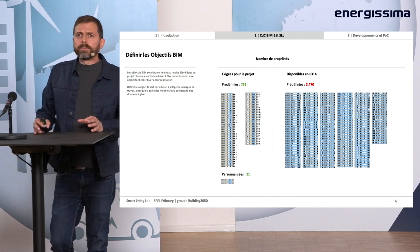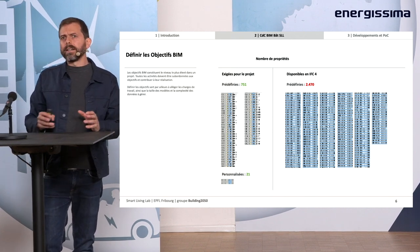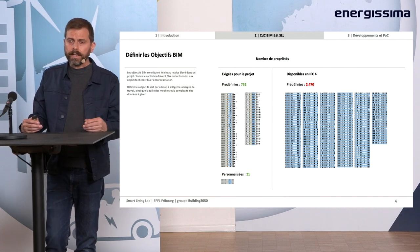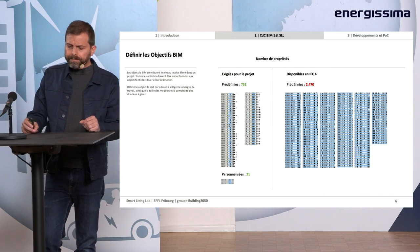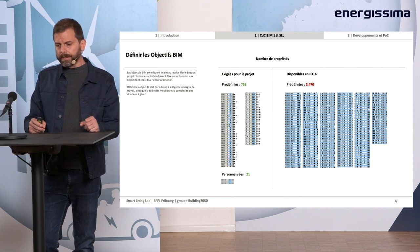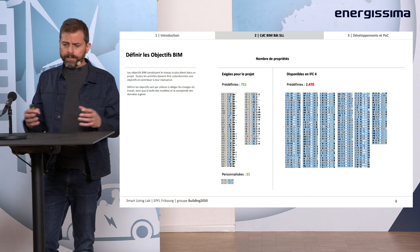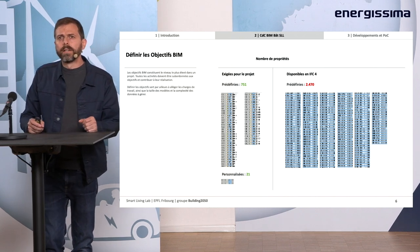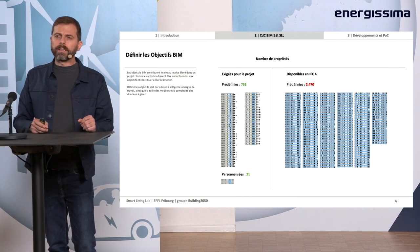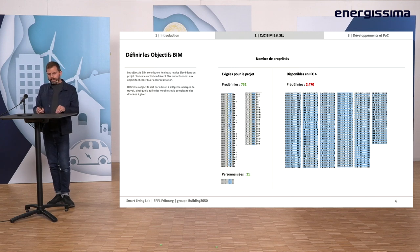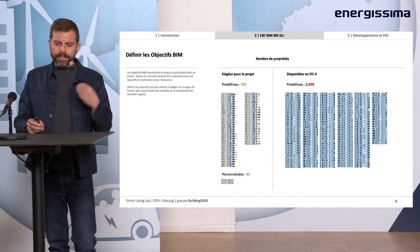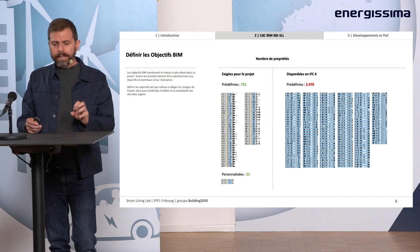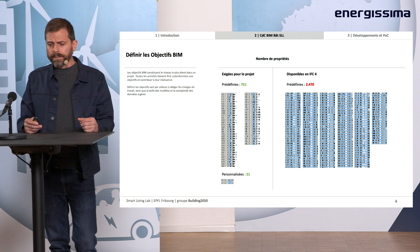Pour le cahier des charges, on commence par définir les objectifs — c'est une partie très importante. Le BIM promet beaucoup de choses, et si on essaie de faire tout, à la fin on termine par ne rien faire. Il faut donc filtrer et choisir ce qu'on va vraiment faire avec le BIM. On a pris tous les objectifs du programme du concours, et on les a croisés avec les usages BIM standards proposés par Media Construct pour les regrouper en quatre objectifs. Les propriétés prédéfinies par Building Smart et les formats IFC sont nombreux, donc on essaie de limiter les objectifs — commencer un cahier des charges, c'est peut-être un processus soustractif.